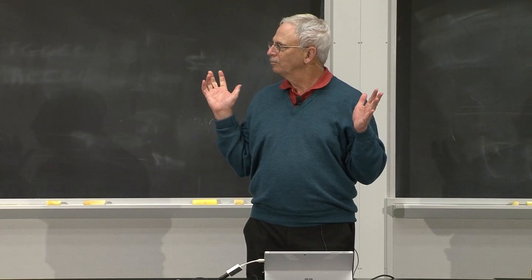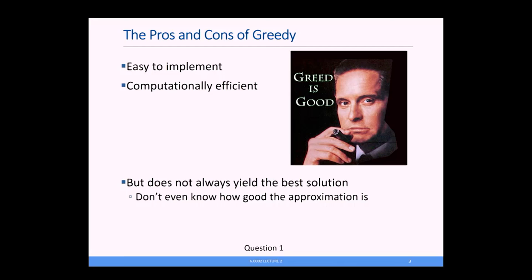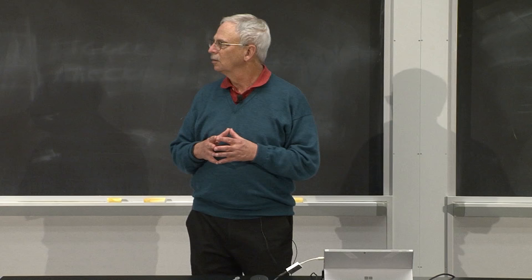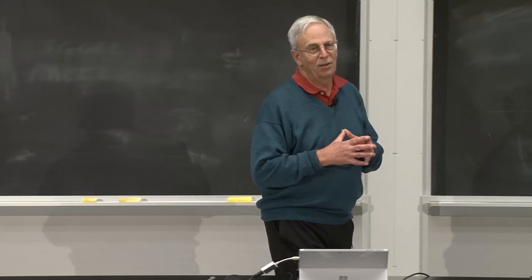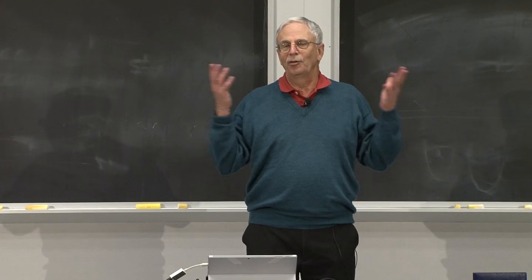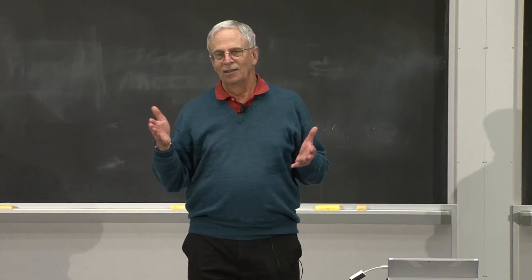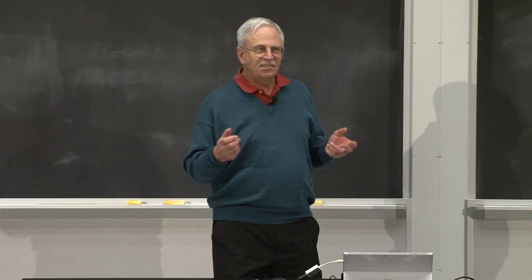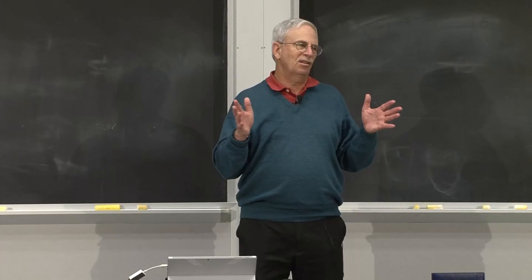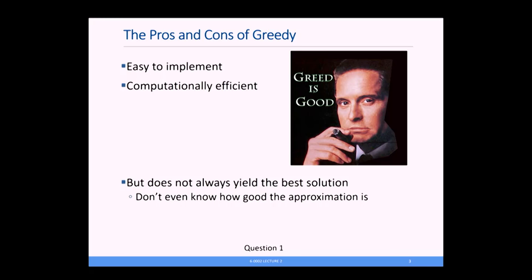So what are the pros and cons of greedy? The pro — and it's a big pro — is that it's really easy to implement. Also enormously important: it's really fast. We looked at the complexity last time; it was n log n, quite quick. The downside is that it doesn't actually solve the problem in the sense that we've asked ourselves to optimize something, and we get a solution that may or may not be optimal. Worse, we don't even know how close to optimal it is — maybe it's almost optimal, but maybe it's really far away. There are some sophisticated greedy algorithms that give you a bound on how good the approximation is, but most of them don't do that.